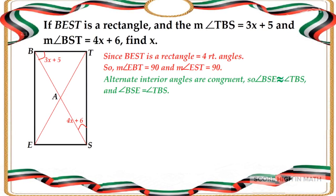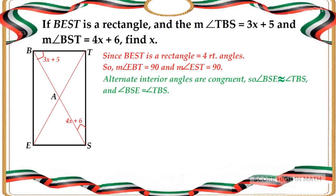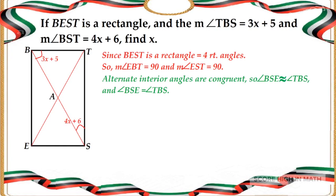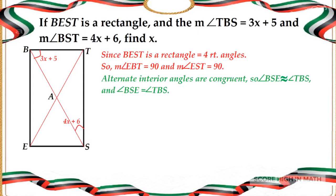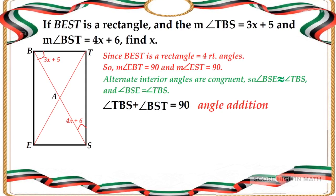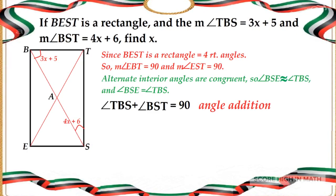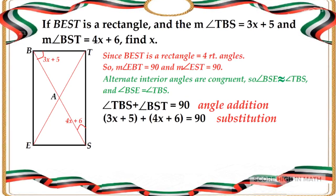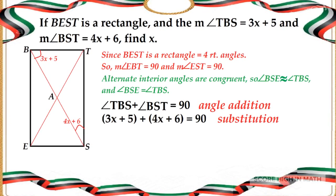In a rectangle, the alternate interior angles are congruent. So the measure of angle BSE is congruent to angle TBS, and the measure of angle BSE is equal to the measure of angle TBS. Therefore, by angle addition, angle TBS plus angle BST is equal to 90 degrees. Substituting the given values into the equation, it becomes 3x plus 5 plus 4x plus 6 is equal to 90.